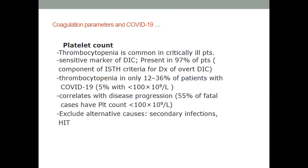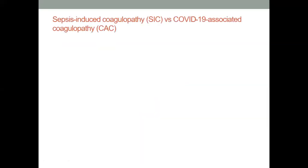Thrombocytopenia is common in patients and is a sensitive marker of DIC. In COVID, we have seen a range of 10 to 36 percent of patients with thrombocytopenia, but clinically significant thrombocytopenia — below a platelet count of 100 — is slightly less common. It correlates with disease progression. When thrombocytopenia is present, other clinical conditions especially in critically ill patients should always be sought and excluded before attributing it as a direct consequence of COVID.